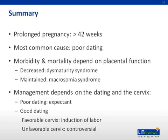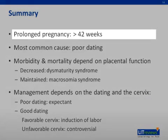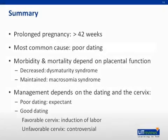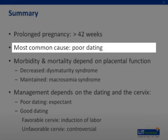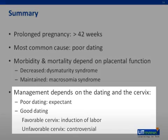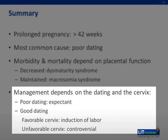The key elements you need to know about prolonged pregnancy are: First, it is defined as a pregnancy that has reached or exceeded 42 weeks of gestational age. Second, the most common cause of prolonged pregnancy is poor dating. Third, morbidity and mortality depend on placental function — if decreased, the consequence is dysmaturity syndrome; if maintained, macrosomia. Fourth and finally, management depends on dating and the cervix. If poor dating, management should be expectant. If good dating, the next step is to check the cervix. If favorable, proceed with induction of labor; if unfavorable, management is controversial.